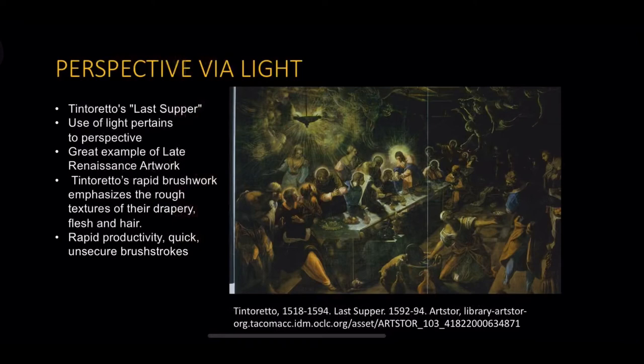For example, the art piece above is one of Tintoretto's most known works, called The Last Supper. You can see rays of light leaving the light source, and some of the characters in the piece are glowing or have a golden aura surrounding their bodies. This could symbolize religious ideas. The use of light and dark in this art piece is amazing — you can really see the powerful differences of the two. The art piece is also a great example of late Renaissance artwork. Tintoretto's rapid productivity is also shown in this piece through signs of unsecured brushstrokes in the characters' illuminated clothes.